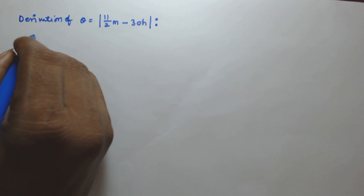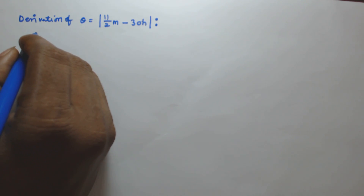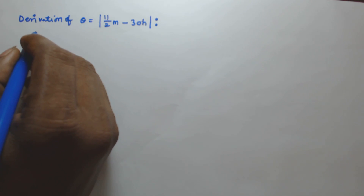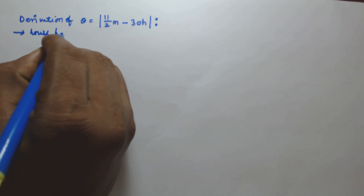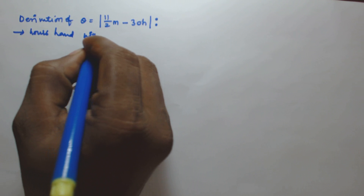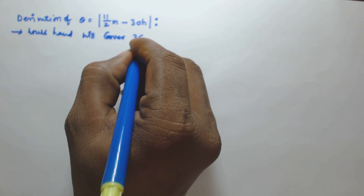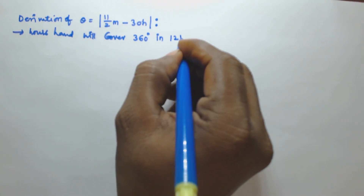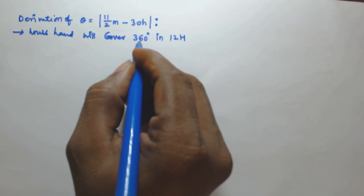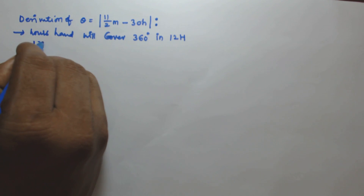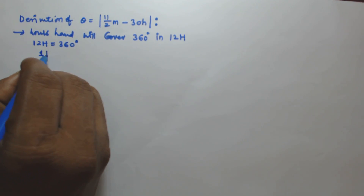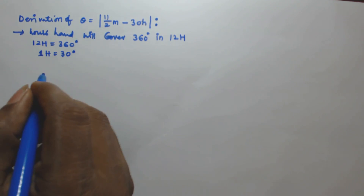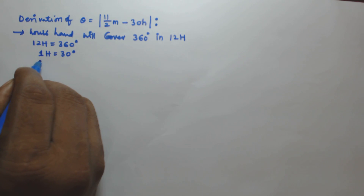If you take the hours hand, there are 12 hours in the clock, and these 12 hours are going to be equal to 360 degrees because the clock is circular. So we can say the hours hand will cover 360 degrees in 12 hours. That means 12 hours = 360 degrees, so one hour is equal to 30 degrees.